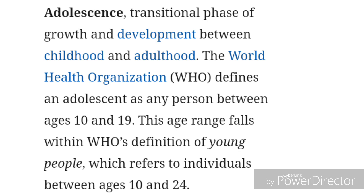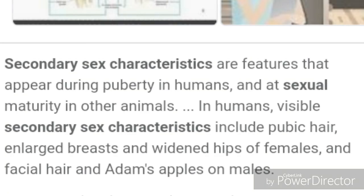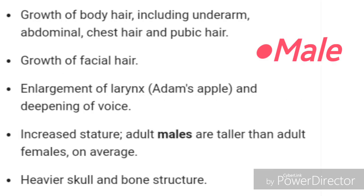During the adolescence period, changes are observed in the human body internally and externally. These are called secondary sexual characteristics. Secondary sexual characteristics are features that appear during puberty in humans. Visible secondary sexual characteristics include pubic hair, enlarged breasts and widened hips in females, and facial hair and Adam's apple in males.